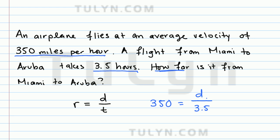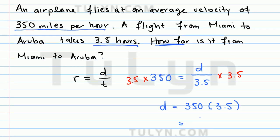To solve for D, we multiply both sides of the equation by 3.5. Multiplying both sides by 3.5, we get that D is equal to 350 times 3.5, which simplifies to 1,225. Remember, D is distance, and since we used 350 miles per hour, miles is the unit we should use. So D is equal to 1,225 miles.